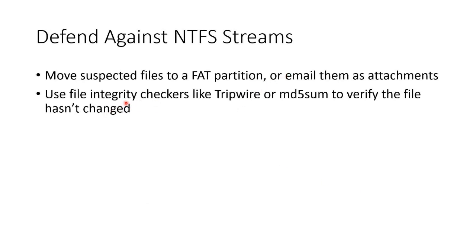You can also use file integrity checkers like Tripwire or MD5Sum to verify the file hasn't changed. But if you're going to use an integrity checker — something that creates hashes — that means you need to know the original hash beforehand. Chances are you don't have that. However, maybe you downloaded something and the download site provided the MD5Sum hash, which will be the same every time if you haven't changed the file in any way, shape, or form.